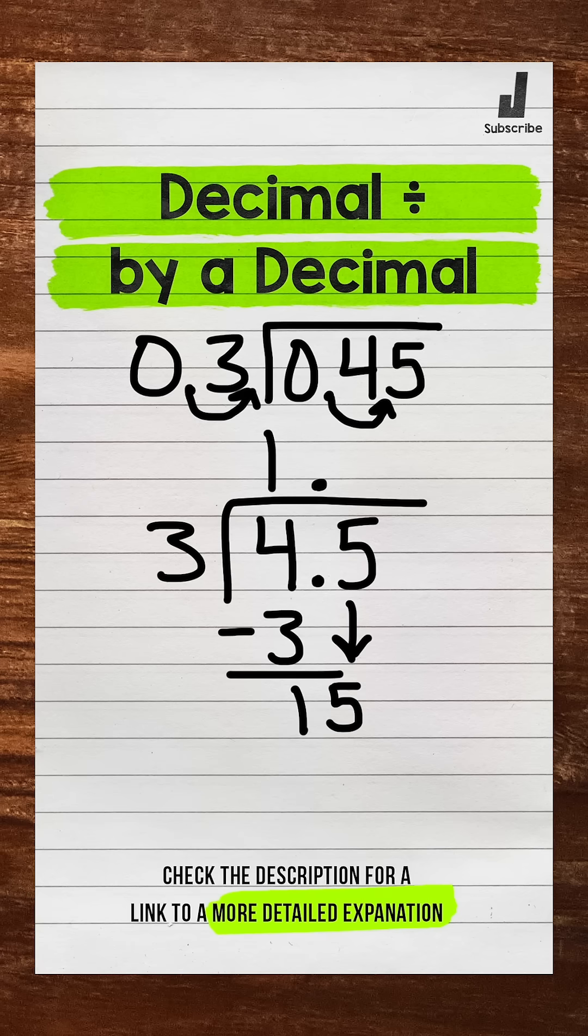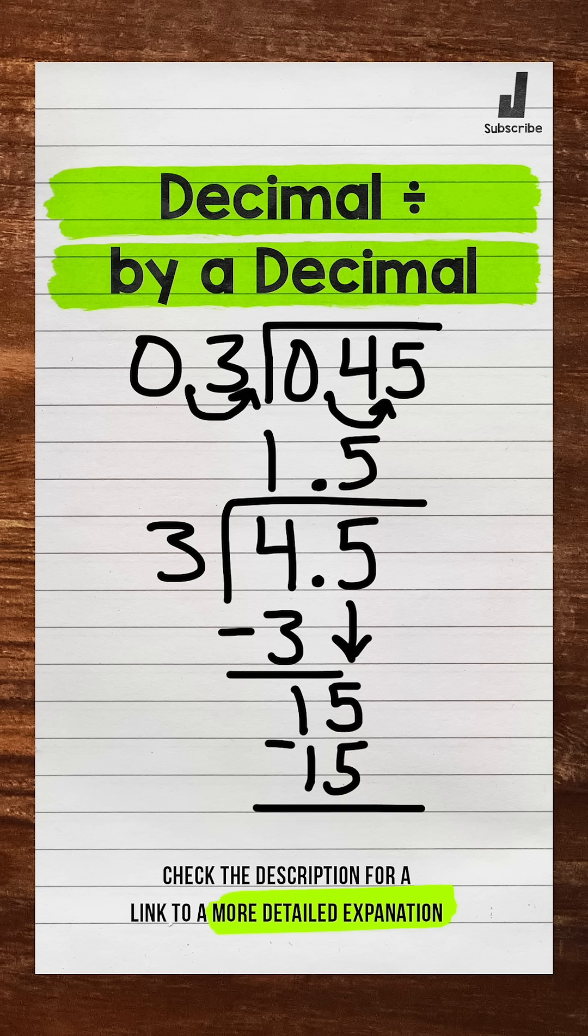We have 15 divided by 3. That's going to be 5. 5 whole groups of 3 and 15. Now multiply. 5 times 3 is 15. Subtract. 15 minus 15 is 0. And we are done.